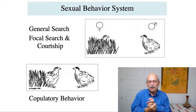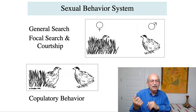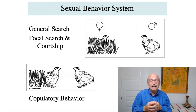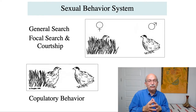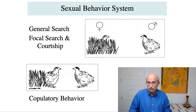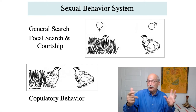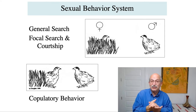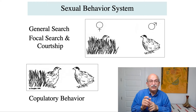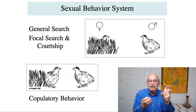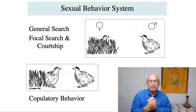When the two of them are closer together, you can get actual copulatory behavior. So the sexual behavior system has three different kinds of responses: general search, focal search, and copulatory behavior. And you can condition each of those different kinds of activities. You can condition those cues to general contextual cues — the meadow where all of this takes place — or you can condition them to an arbitrary stimulus like a tone or light, as in the laboratory paradigm. Or you could condition these things to species-typical cues, which are minimal stimuli that the female provides that the male has access to.